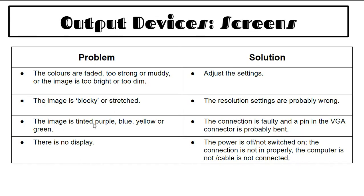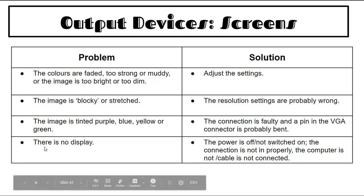If the image is tinted purple, blue, yellow, or green, the connection is faulty — a pin in the VGA connector may be bent or the cable is not in correctly. Not all screens use VGA; some have DisplayPort or HDMI. With VGA, if it's not screwed in tightly you can get color issues. If there's no display at all: the power is off, it's not switched on, or the connection is not in properly.